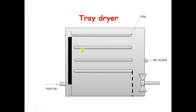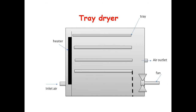The trays are placed in racks or wheels, and these wheels can be rolled in or out of the chamber. The dryer is fitted with a fan for circulating the air over the trays. There are also heaters, which are electrically heated elements provided inside to heat the air. In the corners of the chamber, direction vanes are placed to direct the path of the air.